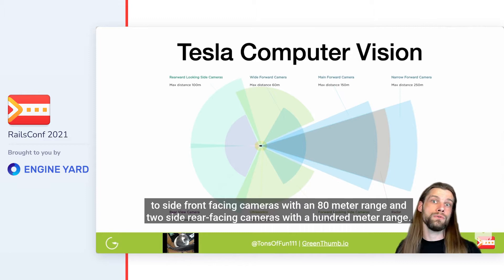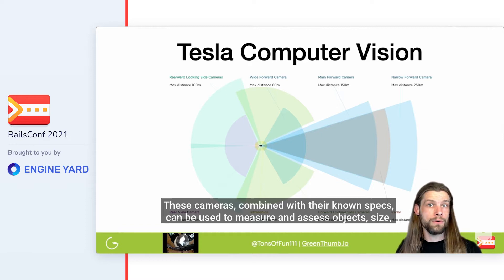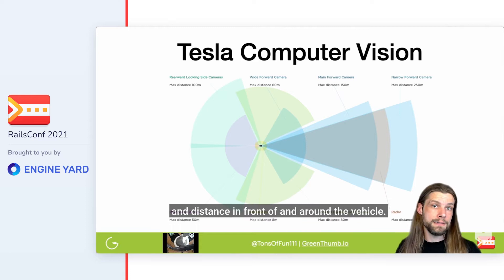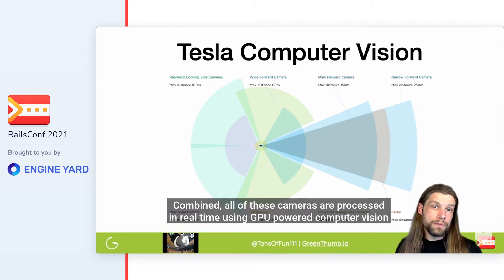Two side-front-facing cameras with an 80-meter range, and two side-rear-facing cameras with a 100-meter range. These cameras combined with their known specs can be used to measure and assess object size and distance in front of and around the vehicle.